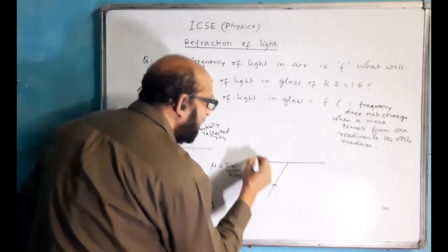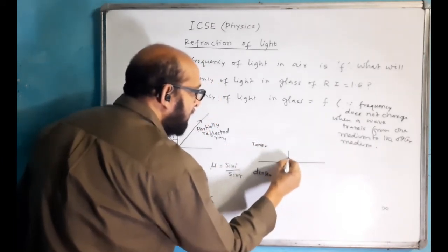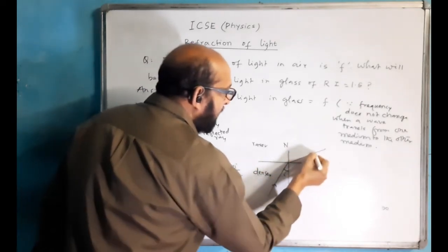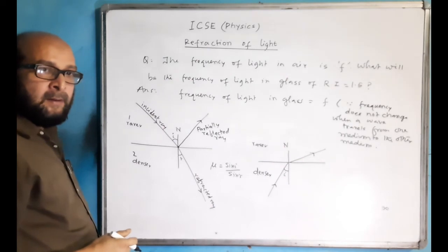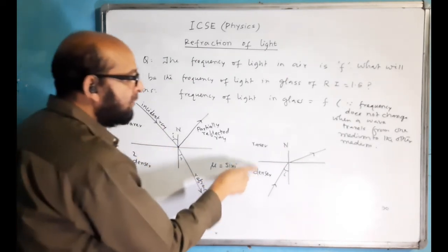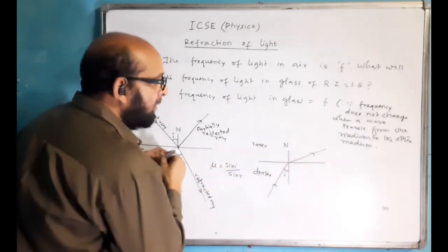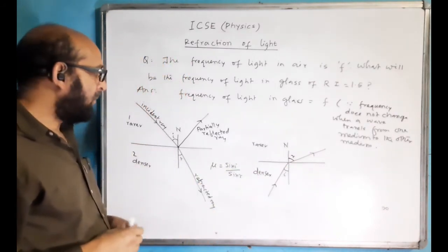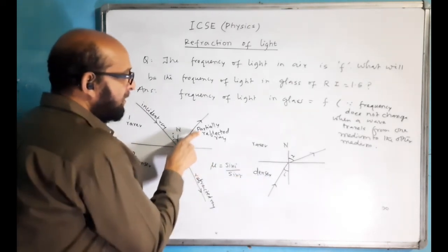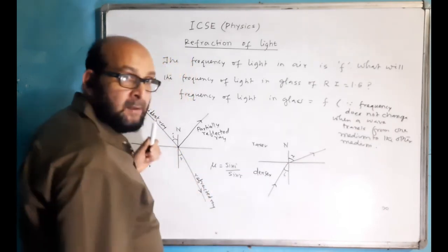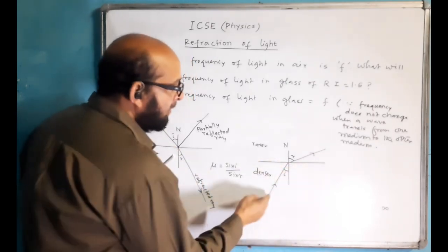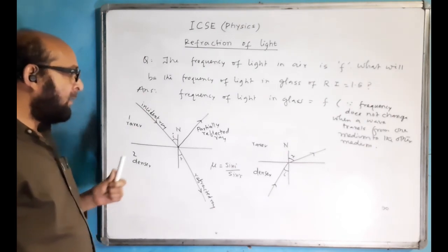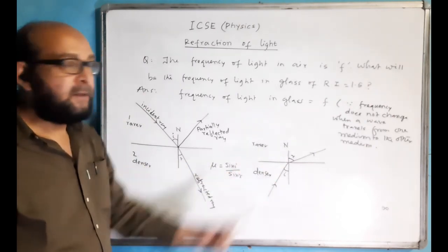Now see the other diagram — the reverse of this. This is the denser medium, and this is the rarer medium. There is the normal; this angle is the angle of incidence. This time the ray will be bending away from the normal because the speed is increasing. When the ray travels from denser to rarer medium, it bends away from the normal. There is also a partially reflected ray here. So: rarer to denser — towards the normal; denser to rarer — away from the normal.